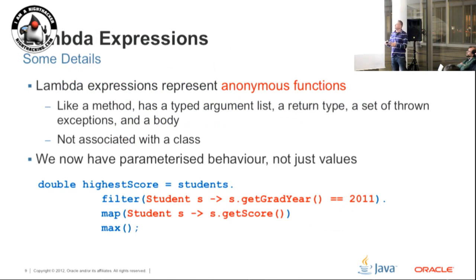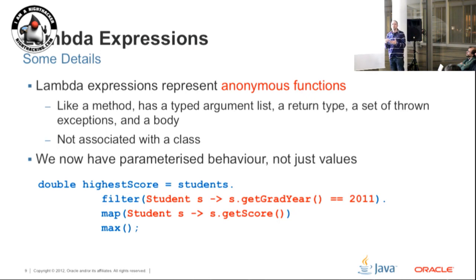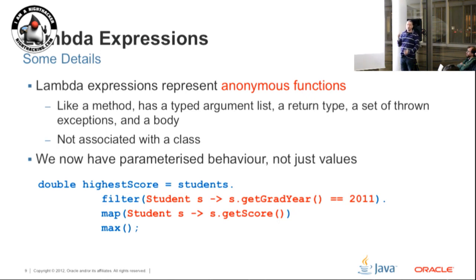Looking at the details of lambda expressions, a lambda expression represents an anonymous function. I said it was like a method, but it's not a method - a method has to be associated with a specific class in Java. With lambda expressions they are anonymous; there is no class associated with them. In terms of structure it's like a method: it has typed arguments, a body, a return type, and it can even throw exceptions. The structure is the same as a method, but it is anonymous, and we call it a function because it's not associated with a class.